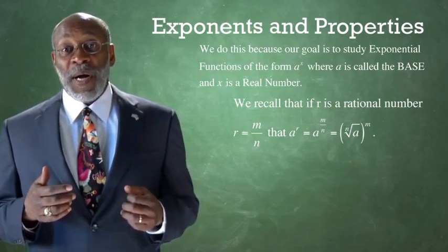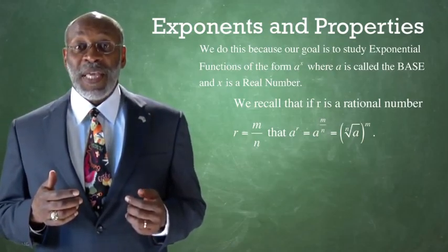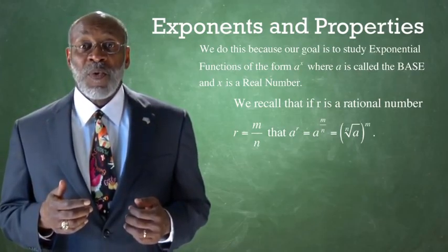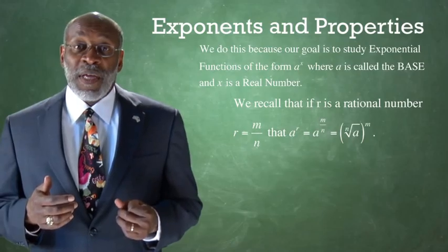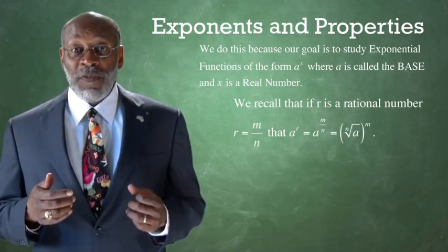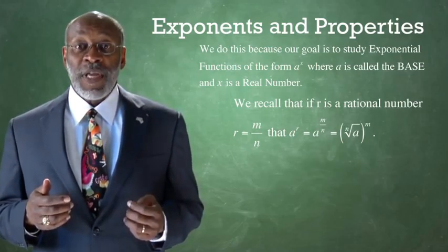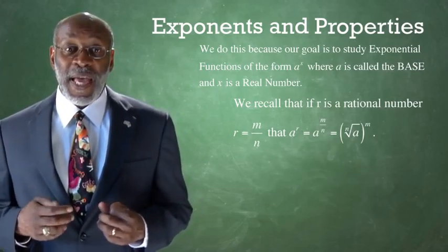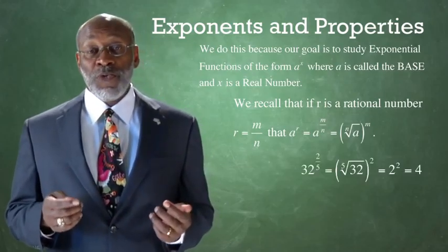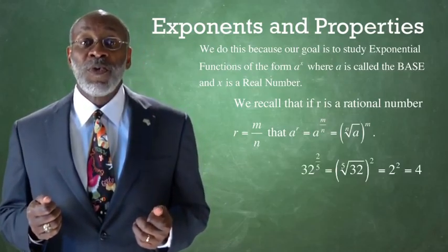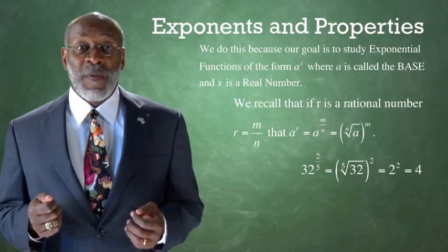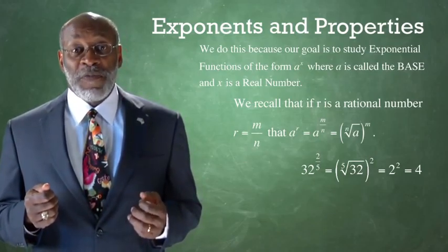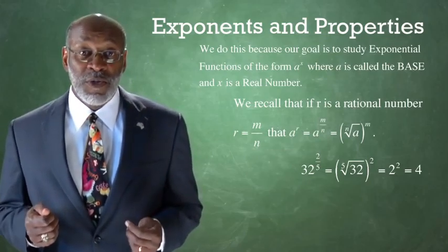A to the power R therefore equals A raised to the power M divided by N, which equals the nth root of A raised to the power M. We use this fact to calculate things like 32 raised to the power 2 over 5, which is the 5th root of 32 raised to the power 2.